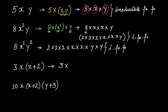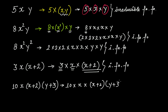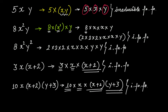What about 3X(X+2)? It is 3 multiplied by X multiplied by (X+2). This algebraic expression has three factors: 3, X, and (X+2). This is the irreducible factor form. Similarly, 10X(X+2)(Y+3) is 10 multiplied by X multiplied by (X+2) multiplied by (Y+3). It has four factors: 10, X, (X+2), and (Y+3). This is the irreducible factor form of the algebraic expression 10X(X+2)(Y+3).